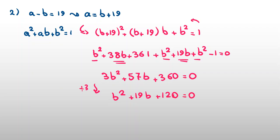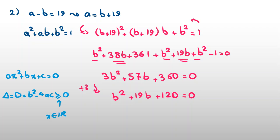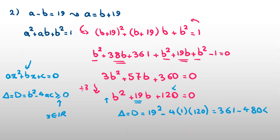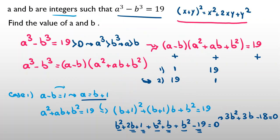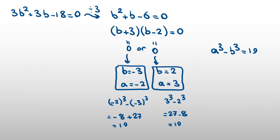Using the quadratic formula: for ax² plus bx plus c equals 0, define the discriminant delta as b² minus 4ac. If x is real, delta must be greater than or equal to 0. Here, delta equals 19² minus 4·1·120 equals 361 minus 480, which is clearly less than 0. So there are no real solutions for Case 2. Therefore our only answers are: (a, b) equals (negative 2, negative 3) or (a, b) equals (3, 2).